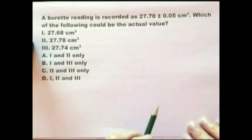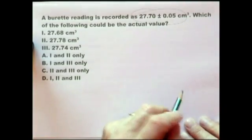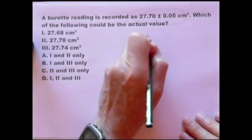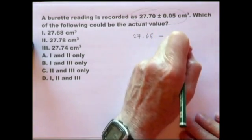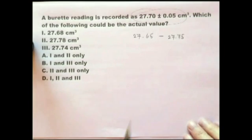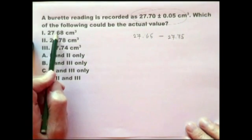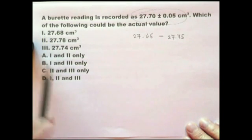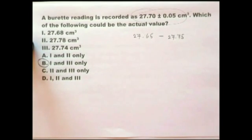In this question the examiner is asking: do you understand what is meant by this value? The answer is you understand it means the result is somewhere between 27.65 and 27.75 — the actual value is somewhere between the two. So looking at the options: yes, that is between the two; that is not between the two; that is between the two. So 1 and 3 — answer B. Another question that can be done within 10 seconds. Take advantage of questions that can be done within 10 seconds.